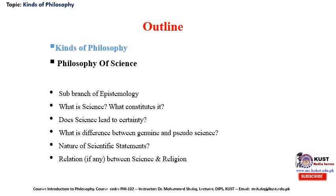Philosophy of science also discusses what is the difference between genuine science and pseudoscience, which can only be determined after knowing the methodology and criteria of genuine science. It also deals with the nature of scientific statements and the relation between science and religion — a very intriguing problem. Science concentrates on experimental and observational knowledge, while religion is based upon a belief system that does not necessarily entail any experience or observation.